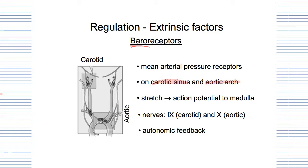When you increase your blood pressure, which means you've got increased stretch, it's going to send action potential signals to the cardiovascular control center. The cardiovascular control center is going to cause an autonomic feedback response that favors the parasympathetic over the sympathetic response. Remember, parasympathetic is what slows down the heart rate, and if you slow down the heart rate, your blood pressure is going to drop.